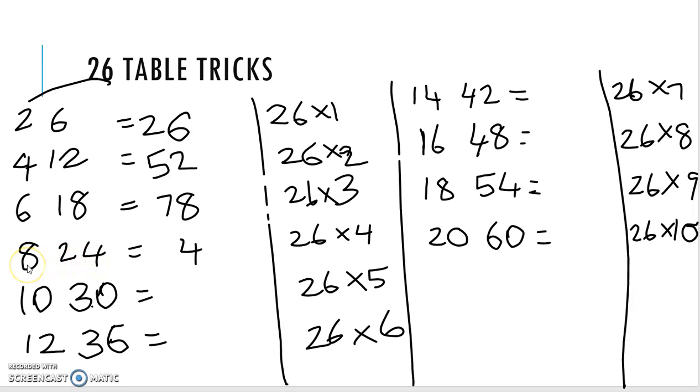Then this 8 plus this 2, 10. 104. Then this 0 first we have to write. Then 0 plus 3. We get 3. 130.